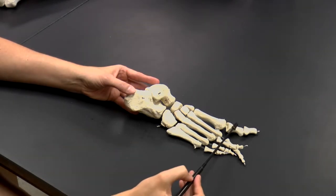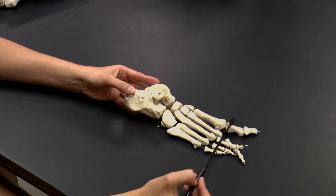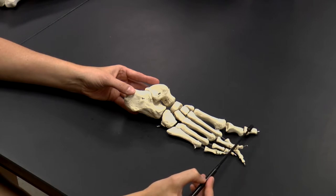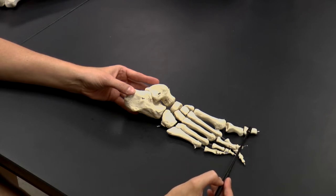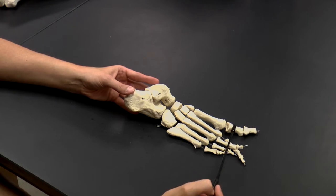And then we also have our phalanges, and you'll remember from our hand that the big toe, or the thumb in our hand, has only two phalanges. We name them for their relative locations in the body. So here we have our distal phalange of phalange one and our proximal phalange of our big toe, number one.